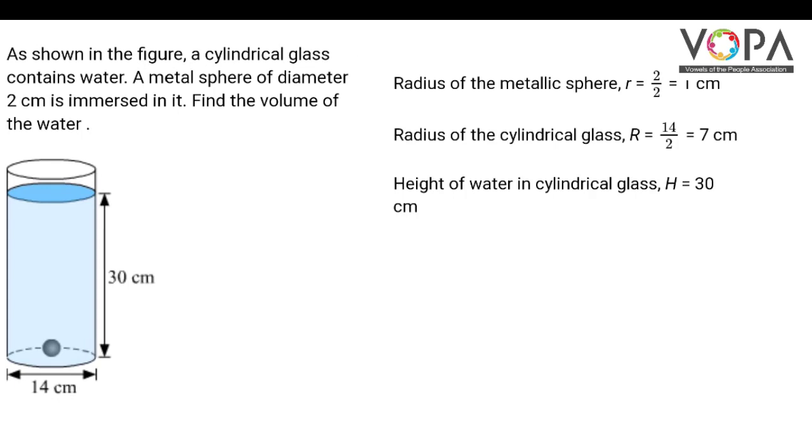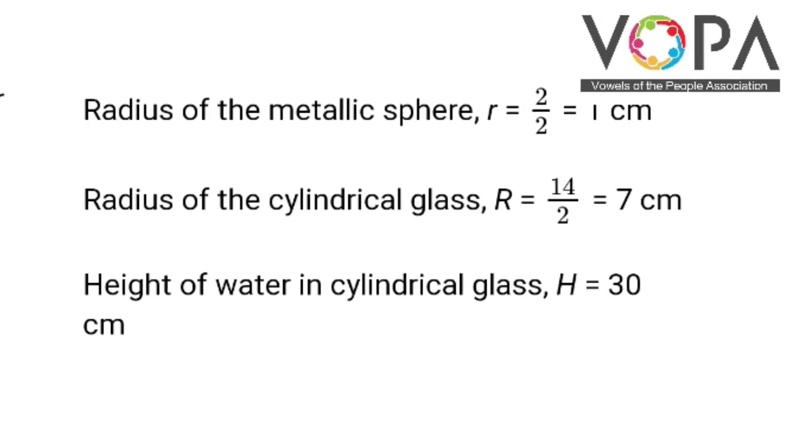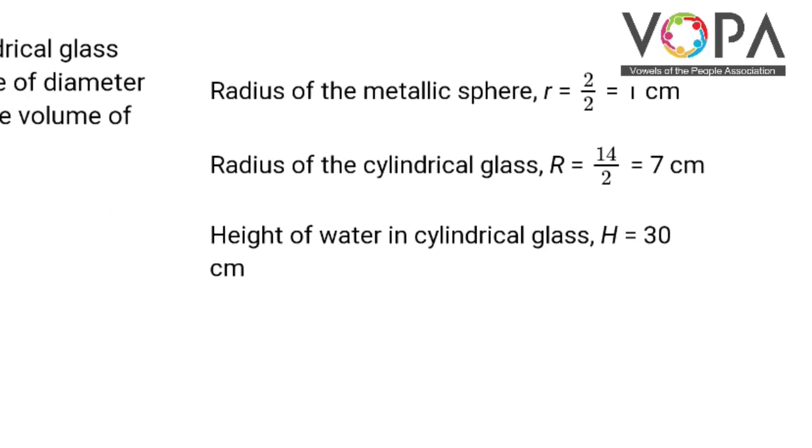So here, radius of the metallic sphere small r will be equal to diameter divided by 2. So that is 2 divided by 2 which gives you 1 cm. Radius of cylindrical glass we can take as capital R which will be again equal to diameter divided by 2. So 14 divided by 2 is 7 cm. And height of the water in the cylindrical glass capital H is equal to 30 cm.